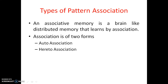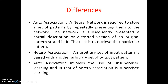An associative memory is a brain-like distributed memory that learns by association. As we keep giving some data to the network or to the brain, it will store the data and keep it in association with some other data, so that whenever you try to retrieve it, it will automatically retrieve the associated data. That is what happens in our brain and what we need to impart to the machine.